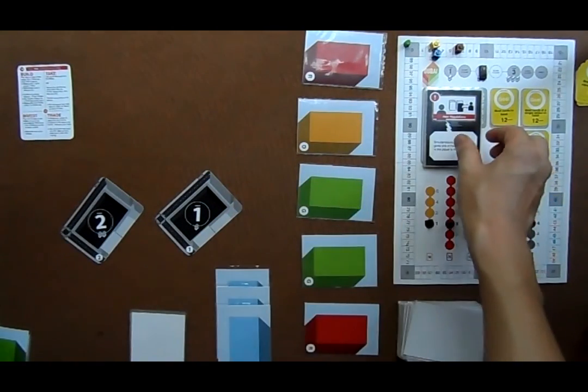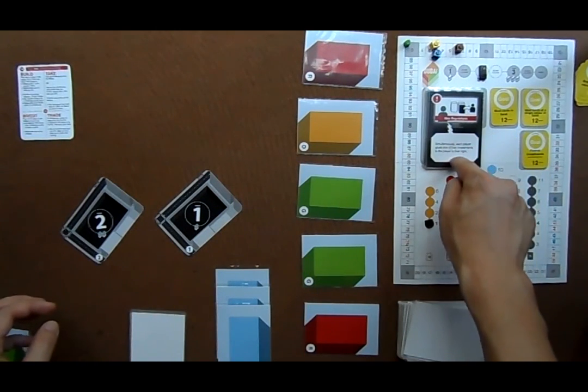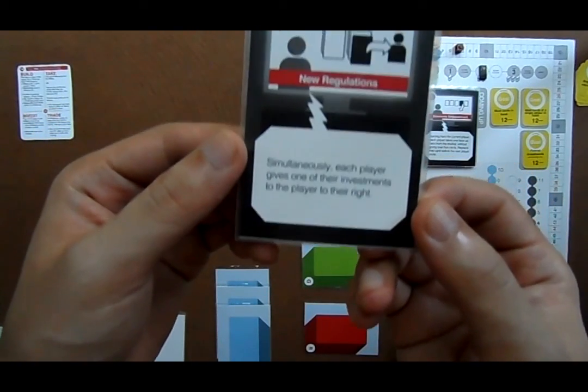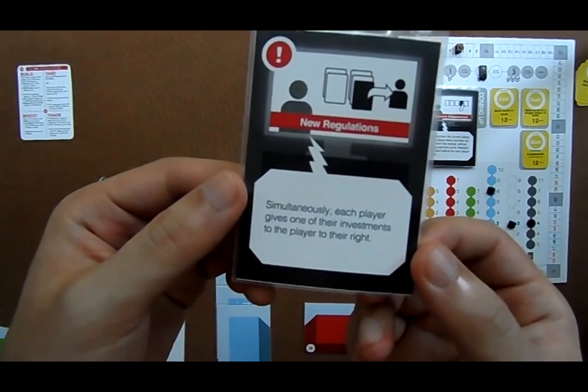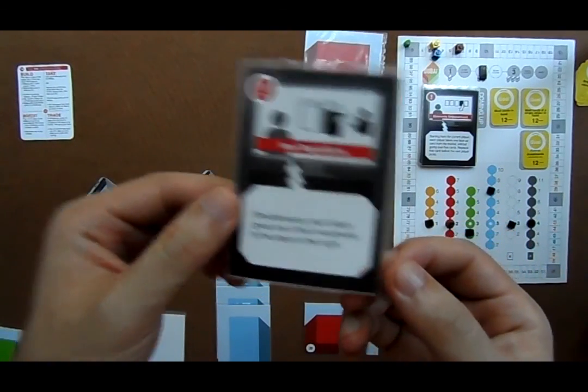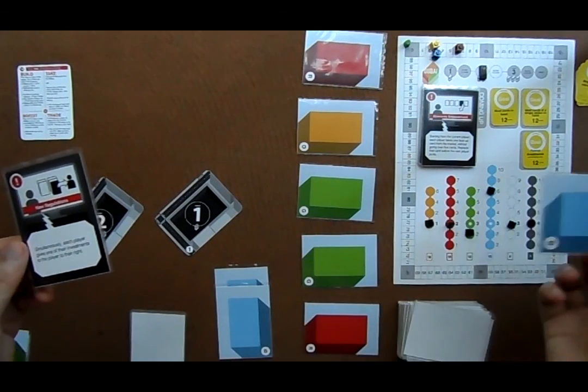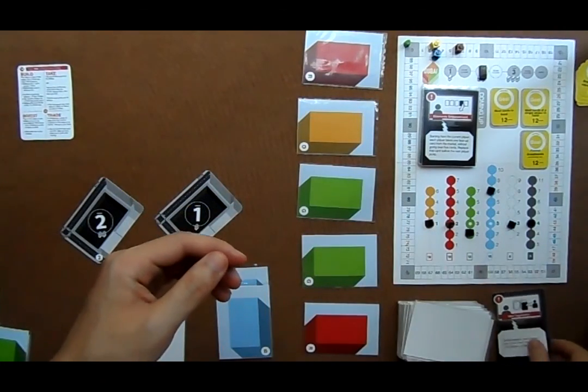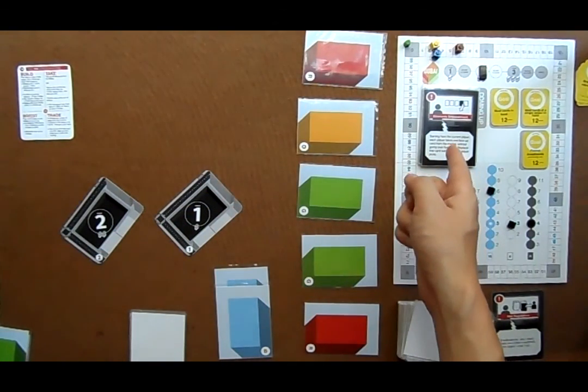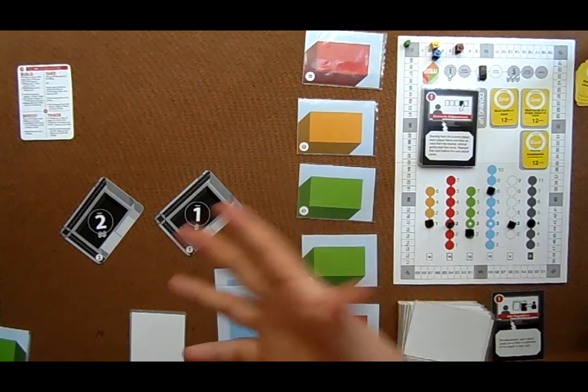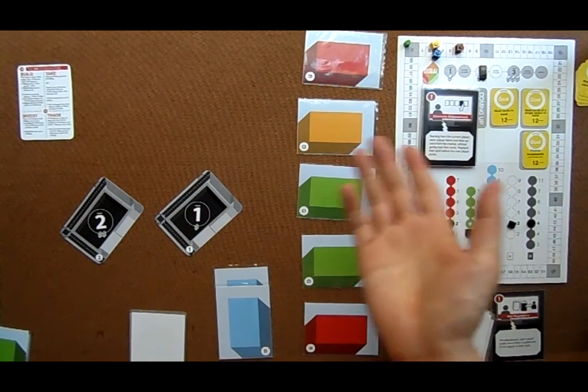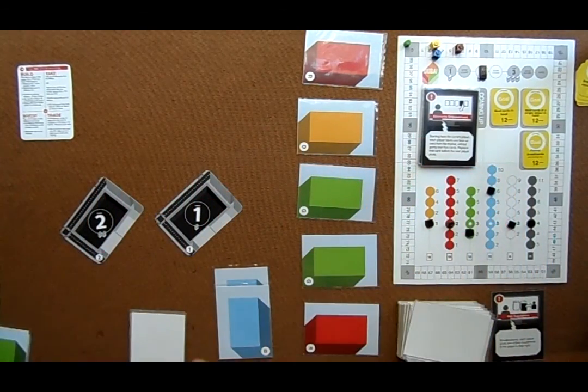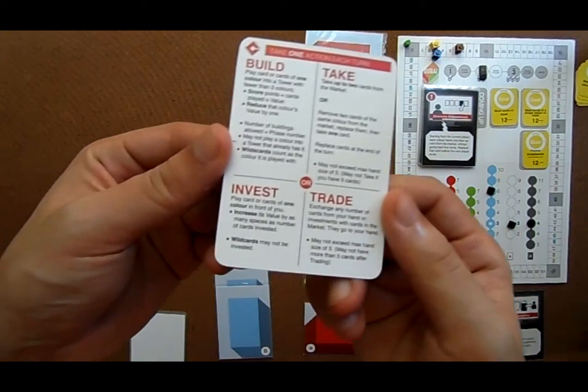Whenever a tower is finished, this card, the top card from the events deck, coming up deck, triggers. This one says, simultaneously each player gives one of their investments to the player to their right. After this is done, so let's say I'm going to take this investment and give it to the player to my right, and after that's done, the event card is discarded into the discard pile, and a new event card is on top of the coming up pile. In this way, every player can see what is coming up, but the timing of it triggering is largely dependent on the player play. Okay, so that's the invest action.